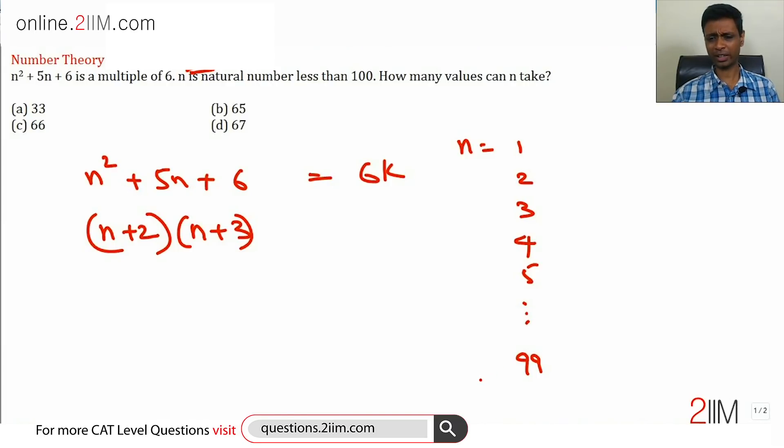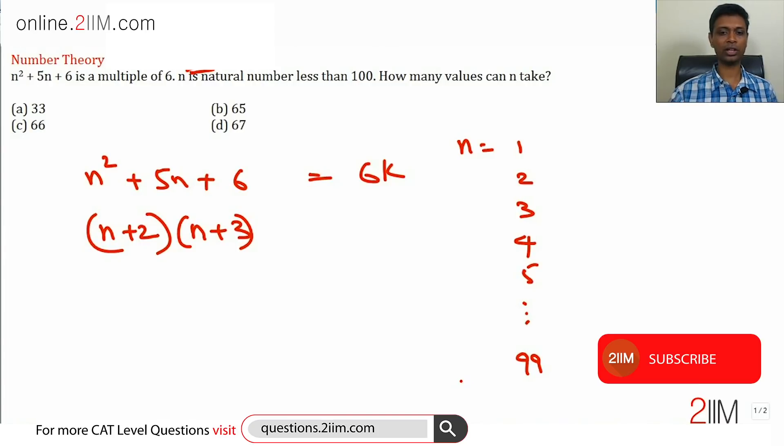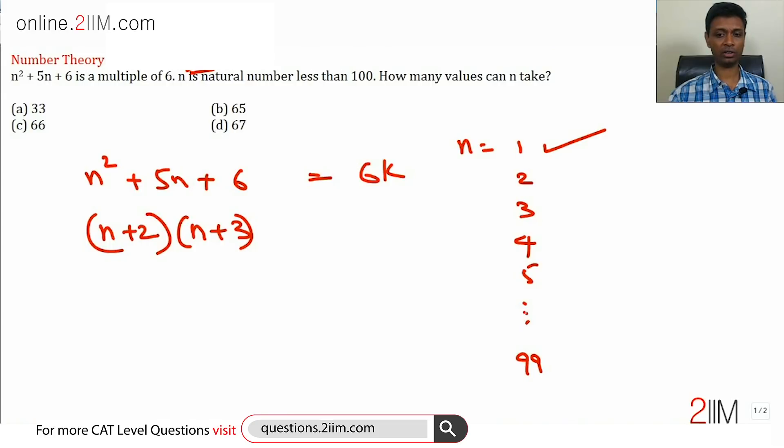Now I'm going to do a little bit of trial and error and then build from there. When n equals 1, this is 3 into 4, so 3 into something, so definitely a multiple of 3. So when n is equal to 2, we're talking about 4 into 5. It's not a multiple, this doesn't work.